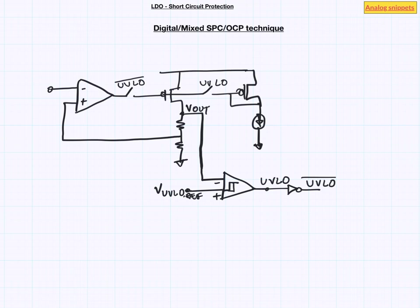How about short circuit condition? A short condition will cause output voltage to droop. And this droop will trigger the UVLO. And again when that happens, we put the output stage at a fixed current.